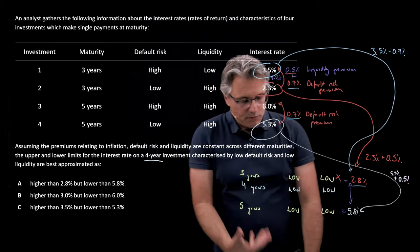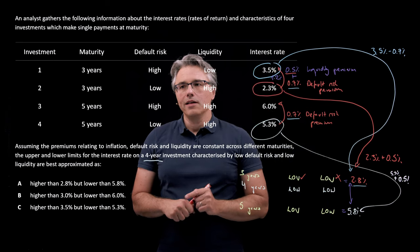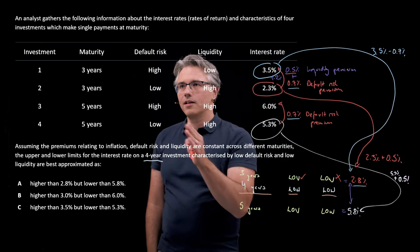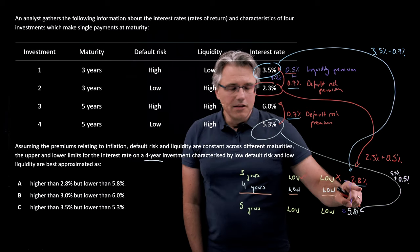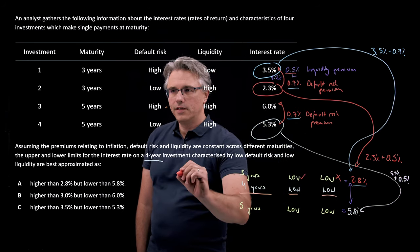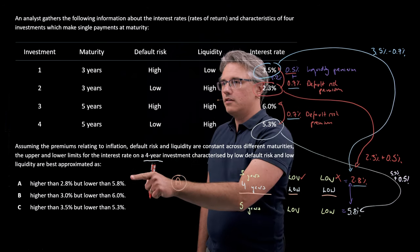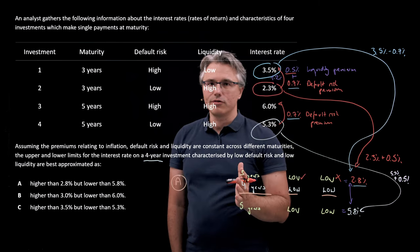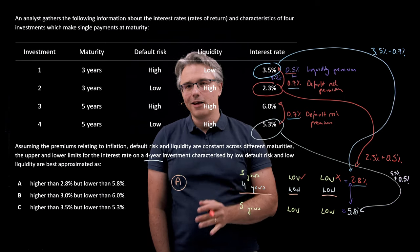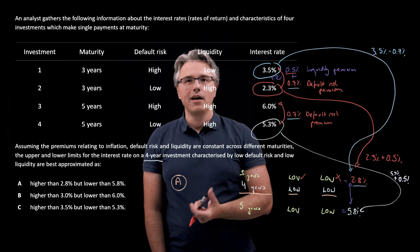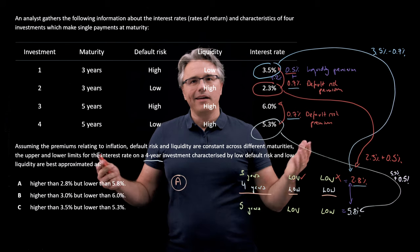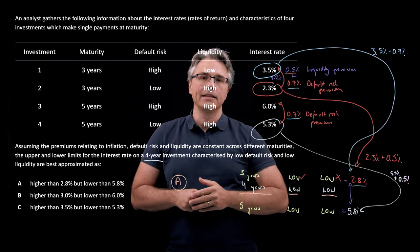So whichever way you solve this, you will finish with an estimate for the interest rate on the four-year investment with low default risk and low liquidity as being somewhere between 2.8% and 5.8% — which leads us to select answer A. This is more or less a logical exercise. In the exam, if you get this type of question, first identify the liquidity and default risk premium components and just work your way through the problem. It can be done in under a minute — a brilliant question to answer if you get it in the exam.